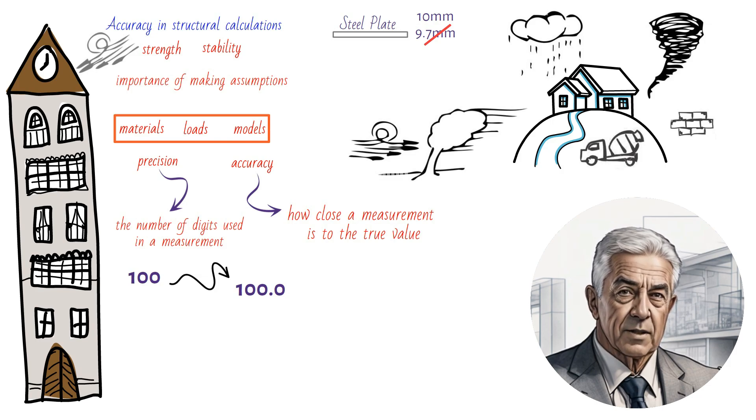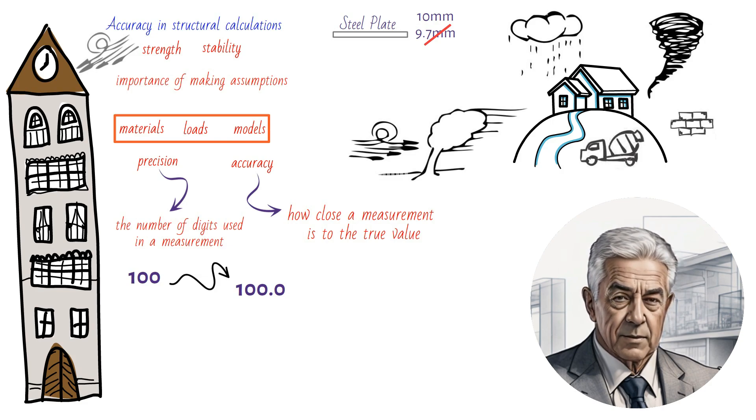Rounding off to standard sizes is important because it ensures that the structure will be built with materials that are readily available. It also simplifies the construction process and fully complies with industry standards like Eurocodes and national standards, such as British standards.